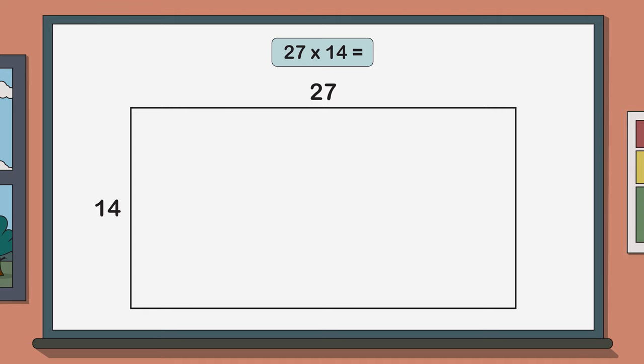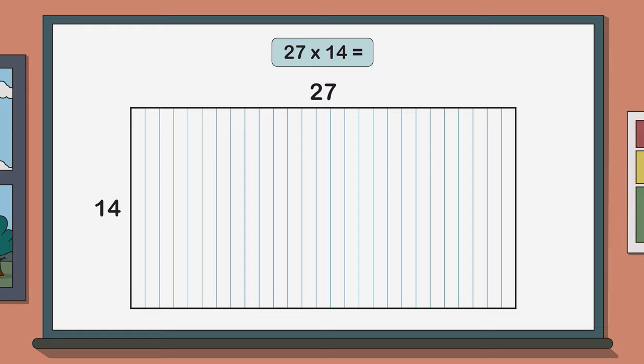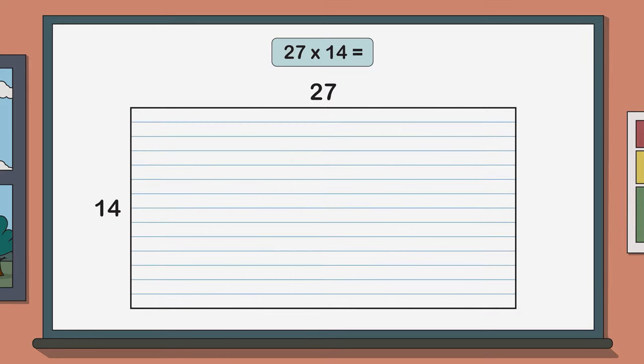Now when you're using this strategy it's also helpful to imagine your rectangle being split up into equal rows and columns. In our case we would have 27 equal columns and 14 equal rows.